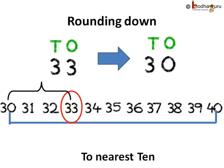And the 1's digit becomes 0. As for example, in case of 33, the 1's digit is 3. And as it is less than 5, 33 is rounded to 30, to its nearest 10.